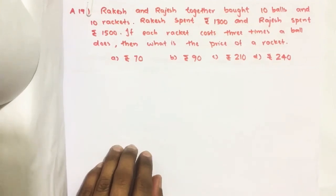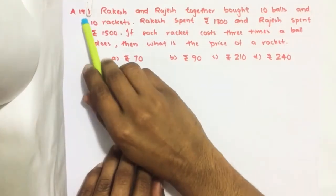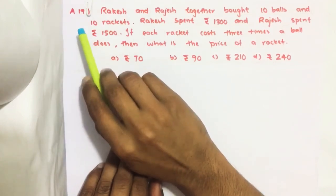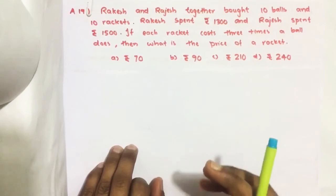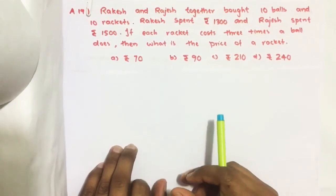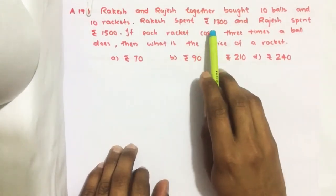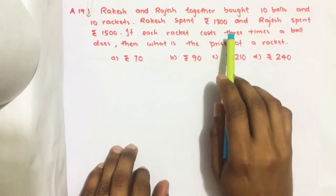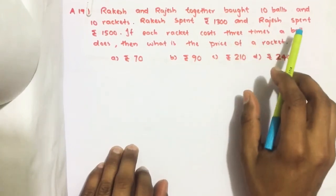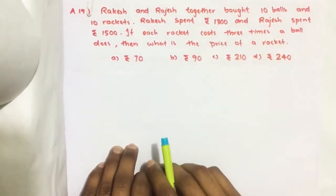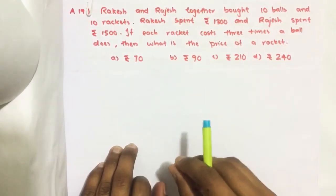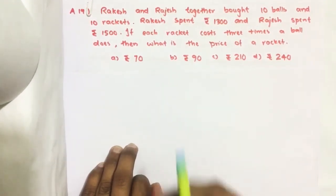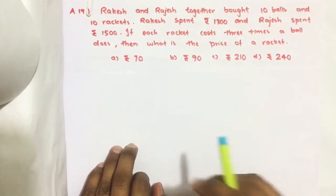Hello everyone. Here I am going to solve the 2019 Seaside question number 19 from question paper series A. Ragesh and Rajesh together bought 10 balls and 10 rackets. Ragesh spent rupees 1300 and Rajesh spent rupees 1500. If each racket costs three times what a ball does, then what is the price of a racket?